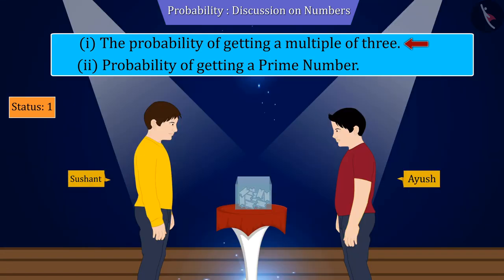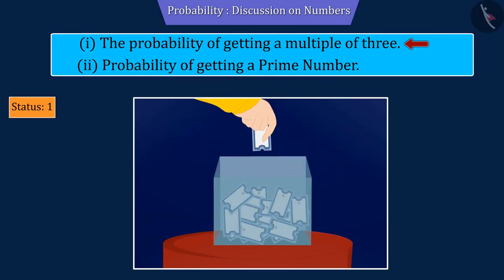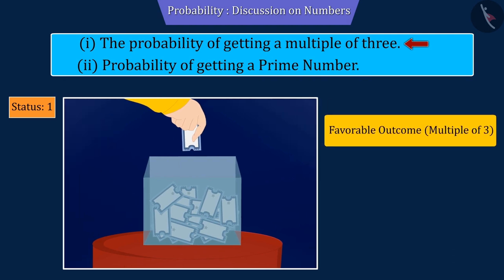Now the question is, when Shushant chooses a slip from these 1 to 20 number slips, then which numbers will be considered favorable outcome, that is, a multiple of 3?